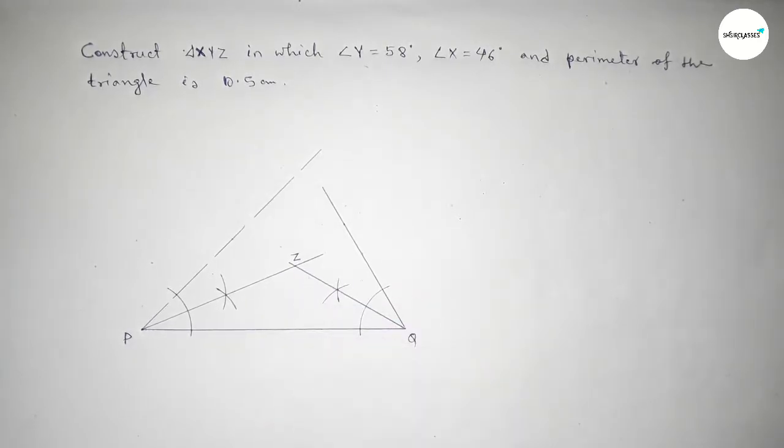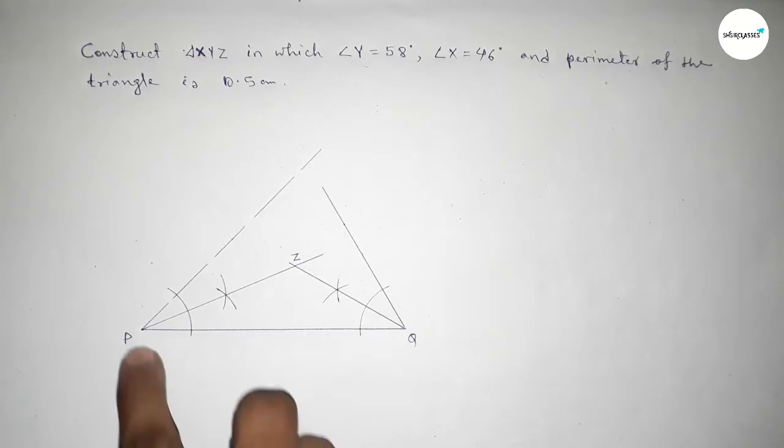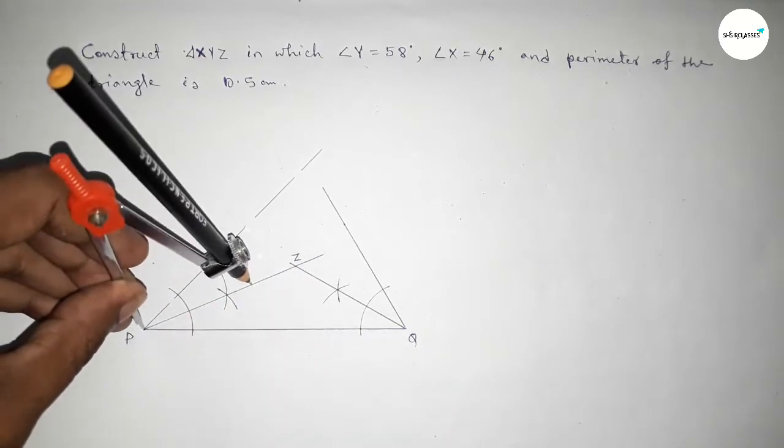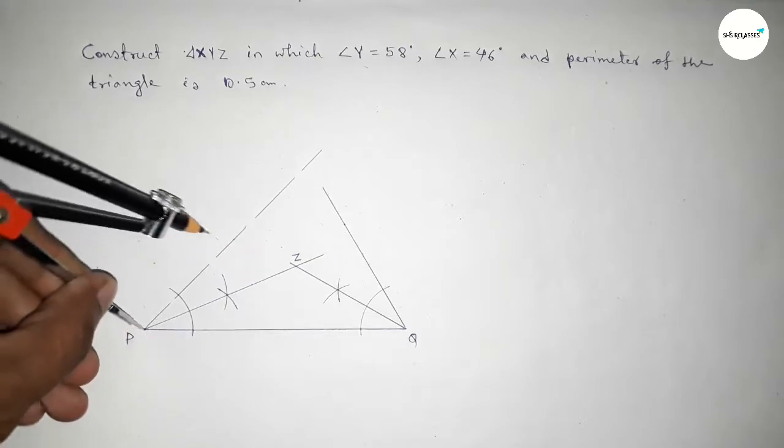Both bisector lines intersect at a point. Taking this intersection point as Z.